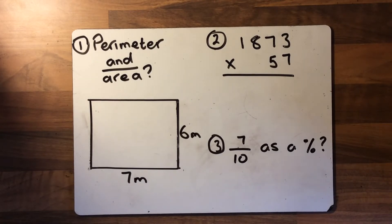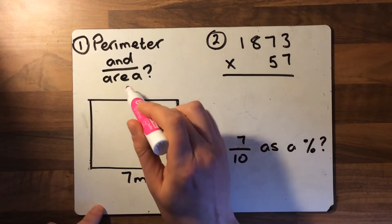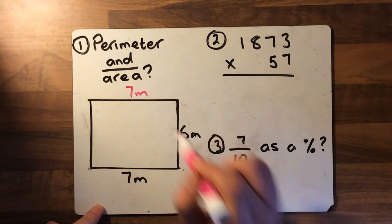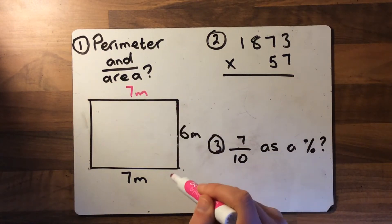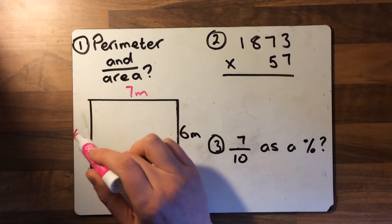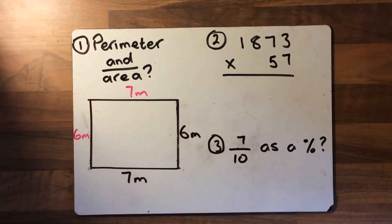Okay, so if we look at number one, finding the perimeter and the area. If we look at finding the perimeter first of all, if this edge here is seven metres, this one opposite it also has to be seven. If this edge is six metres, the one opposite it also has to be six. And finding the perimeter, remember, is adding up all the sides together.